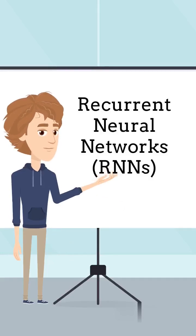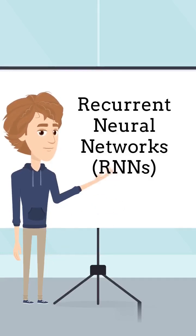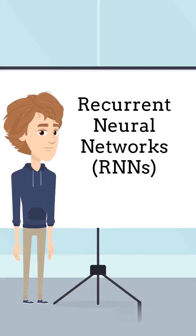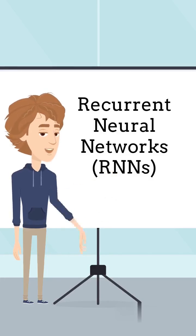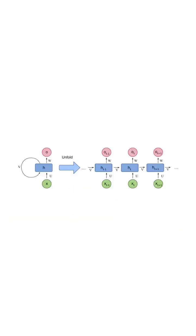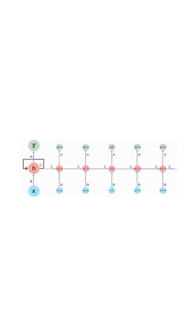Welcome to our video on Recurrent Neural Networks, or RNNs. In the world of artificial intelligence and machine learning, RNNs play a crucial role in processing sequential data. At their core, RNNs are a type of neural network that can handle sequential information by using connections that loop back, allowing the network to persist information across time.